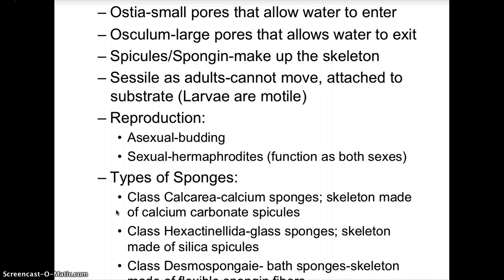Sponges are sessile as adults, meaning they cannot move and are attached to a substrate on the ocean floor. However, at some point during their life cycle all animals are motile — it is the larvae of the sponge that are motile. Two basic types of reproduction: asexual reproduction where the sponge reproduces by budding, or sexual reproduction where the sponge is hermaphroditic, functioning as both sexes, allowing for the exchange of sperm and egg.